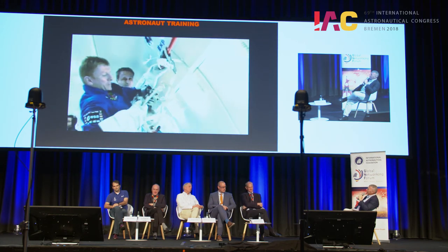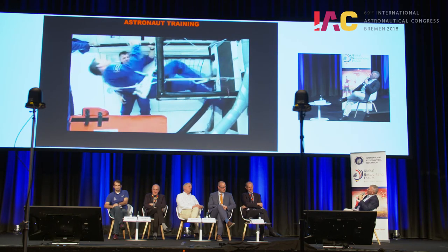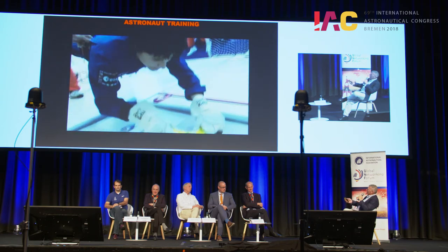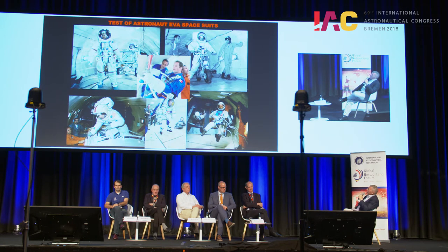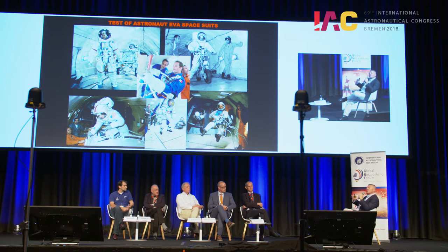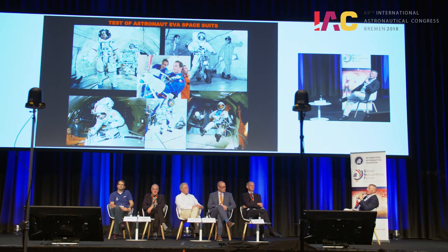Parabolic flights are also used for testing systems and training astronauts at NASA, ESA, and on the Russian side. With Blue Abyss, the next step is parabolic flight 2.0: offering more integrated training during zero-G, Moon-G, and Mars-G phases. There are new avenues yet to be explored with parabolic flight — not just flying parabolas but finding new applications.